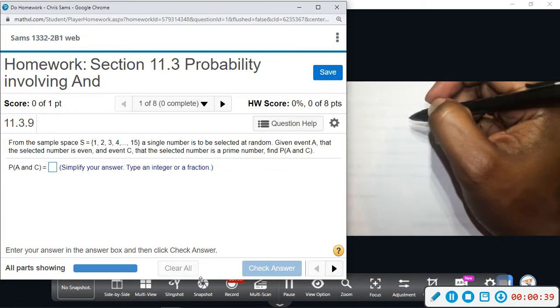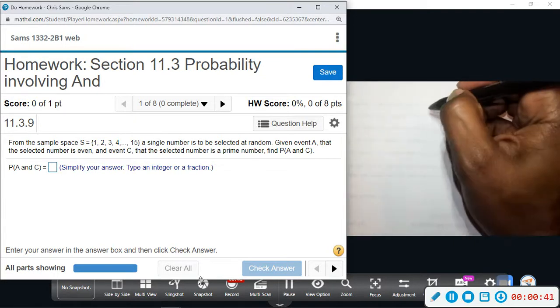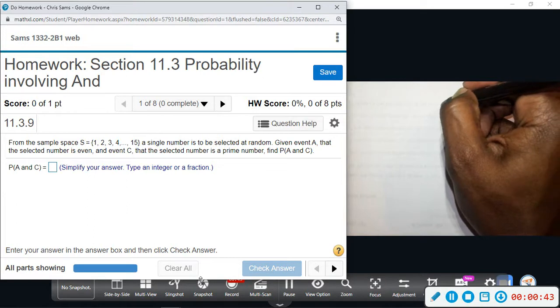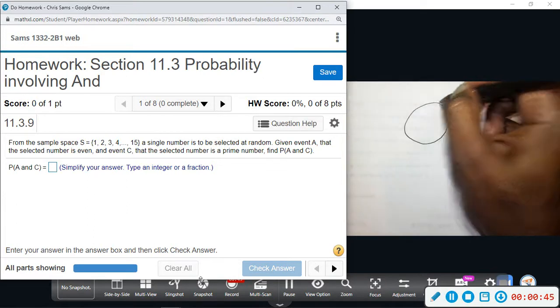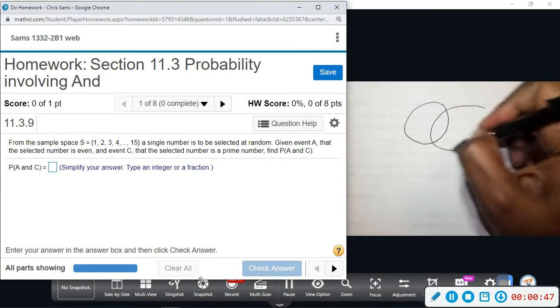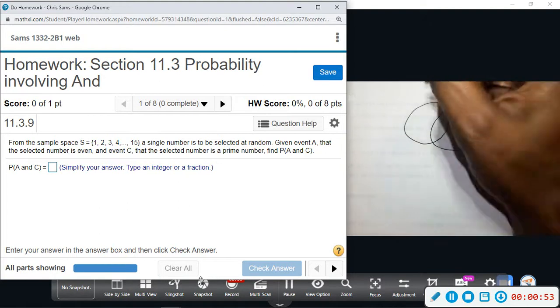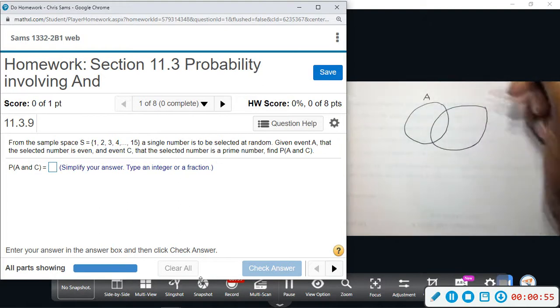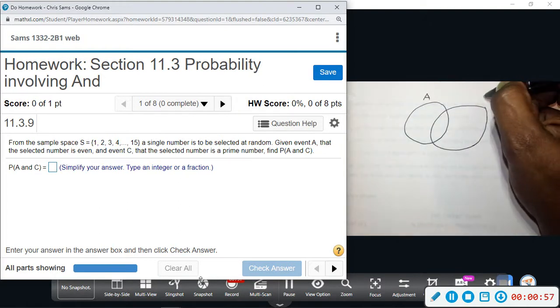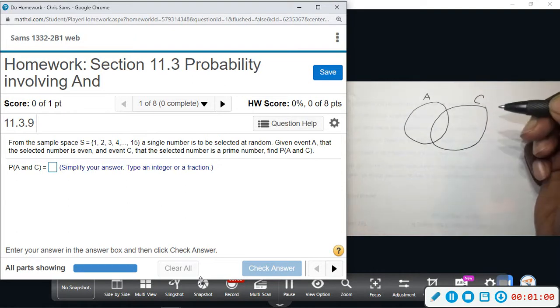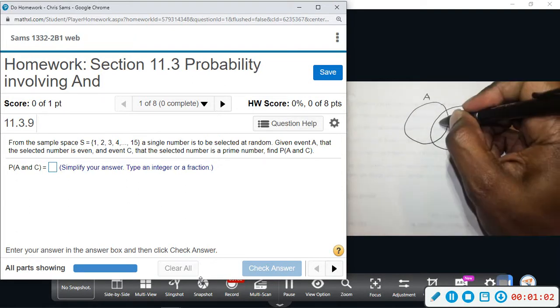This will be easy to see with a Venn diagram, so let's do this. I'm going to draw it out. So A is the event that is even and C is prime. The only even number that's prime is two.